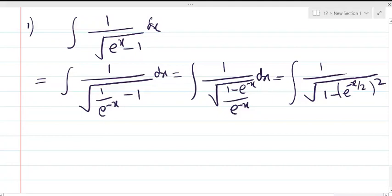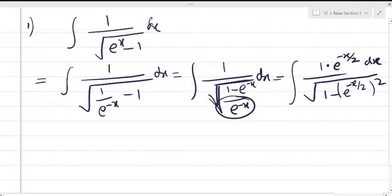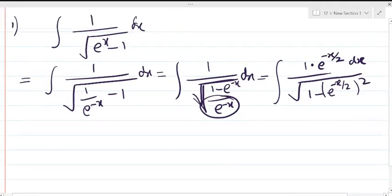For denominator ka e to the power minus x we shall transfer in numerator. It becomes e to the power minus x by 2 dx. Why does e to the power minus x go under root? See here, e to the power minus x is in square root, so when it goes up it becomes e to the power minus x by 2.